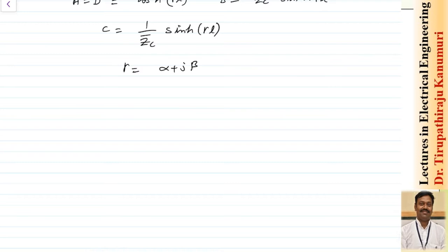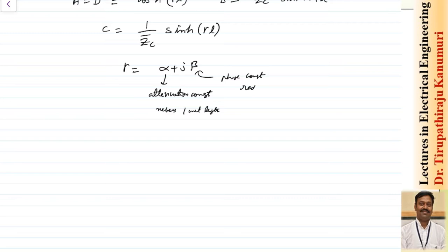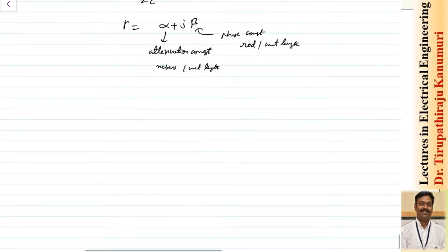The value of alpha is the attenuation constant, in nepers per unit length. Similarly, the value of beta is the phase constant, in radians per unit length. Alpha gives how much attenuation there is, and beta gives how much phase shift there is.